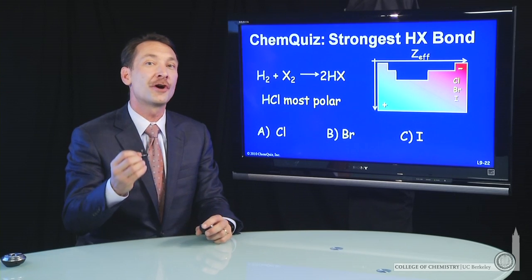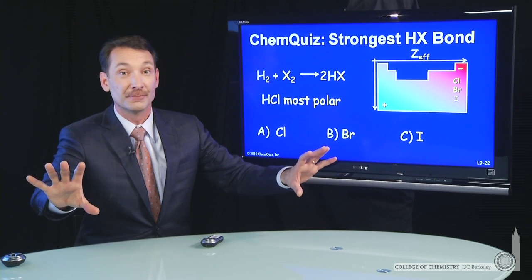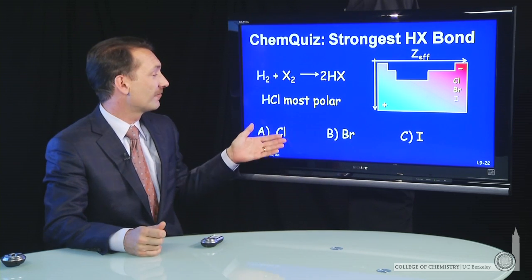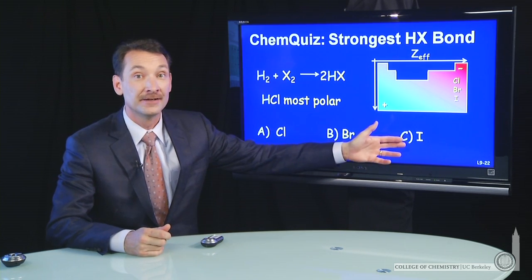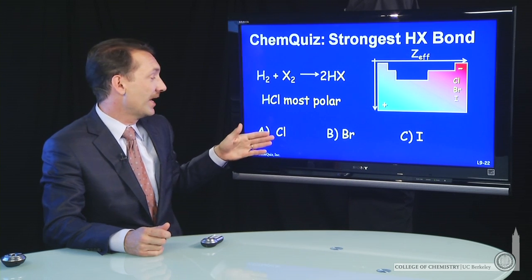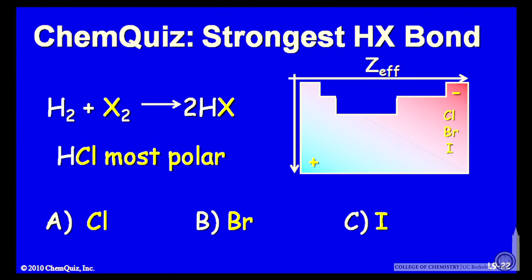We're looking for the strongest bond formation, or the most release of energy when the bond forms. We have chlorine, bromine, and iodine forming a bond with hydrogen. So HCl, HBr, or HI, which is the strongest bond?